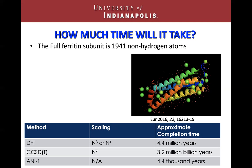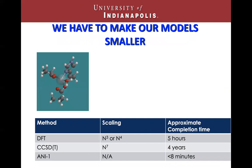So what do we have to do? We have to make our models smaller. I took that whole subunit with 1,941 atoms and cut it down quite a bit to make everything work. We cut it down to the three most impactful amino acids on this subunit — the three amino acids directly surrounding the ferrooxidase center at the active site. So we went from 1,941 atoms down to just around 30.